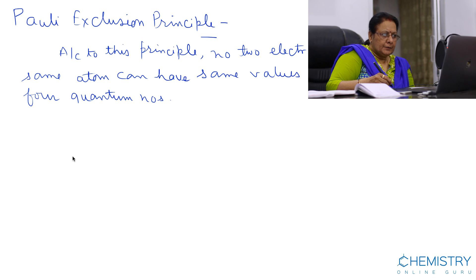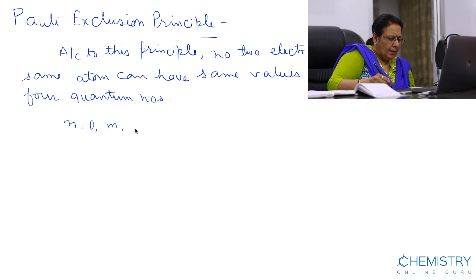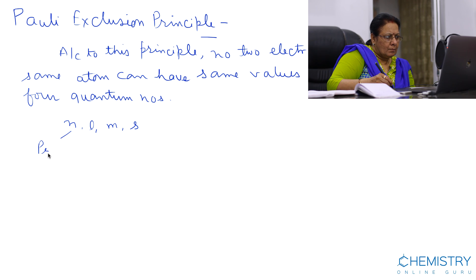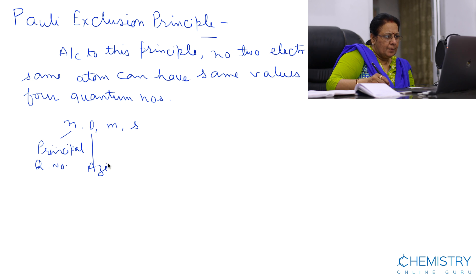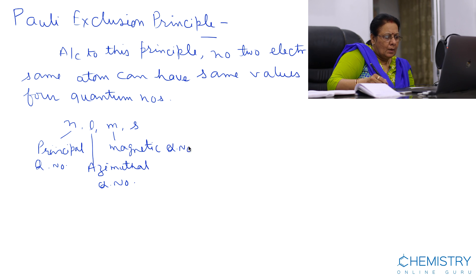The four quantum numbers are N, L, M, and S. N means principal quantum number. L means azimuthal quantum number. M means magnetic quantum number. And S means spin quantum number.